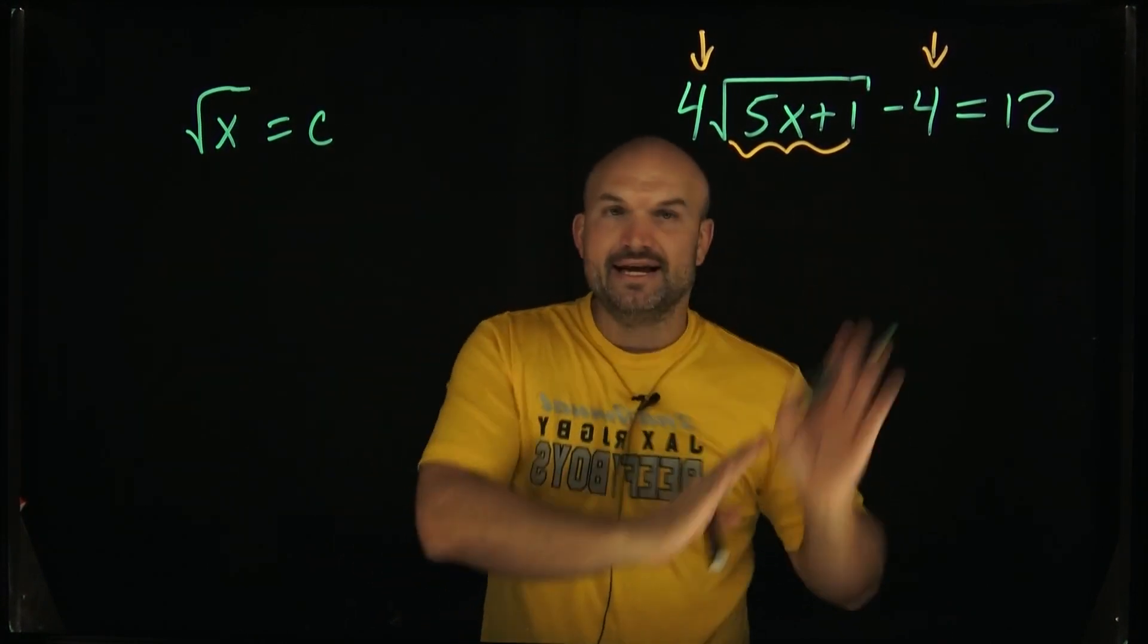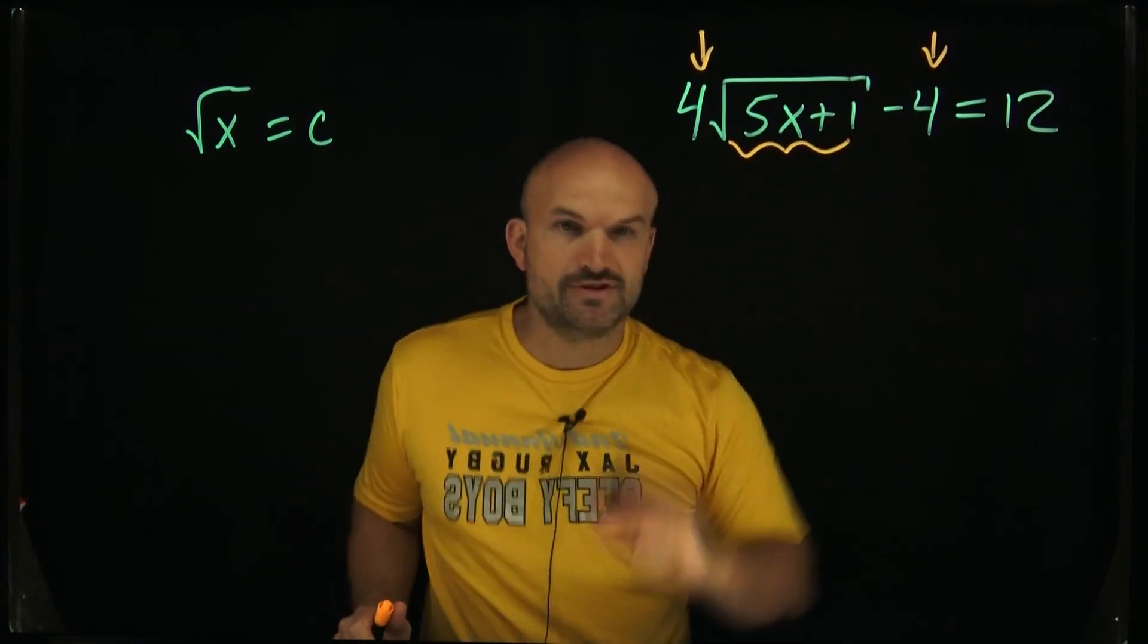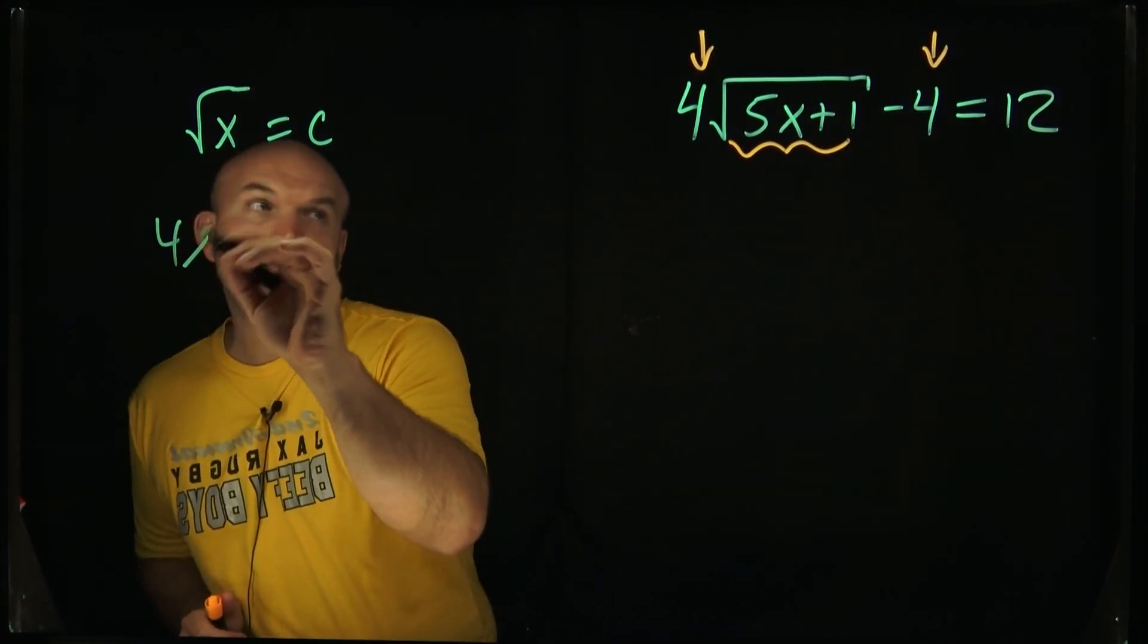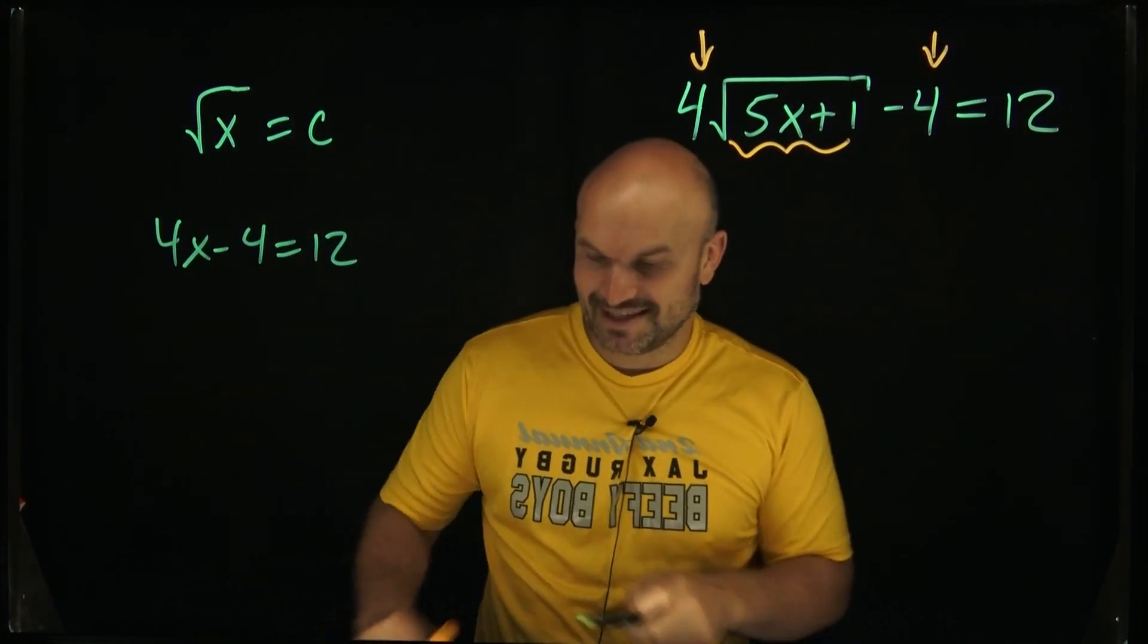So if you just think about this, one of the things I like to do when we're first learning this is say, you know what, forget about the square root. What if I just wrote this as 4x minus 4 equals 12? What would you do? And this is the relationship. What is actually x? x is actually a function, it's actually the identity function.